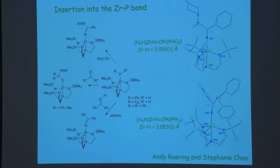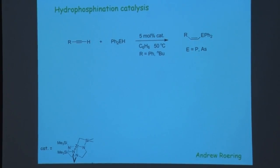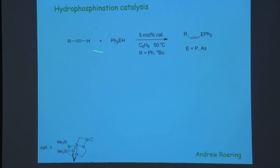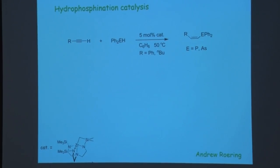Since these zirconium phosphido compounds activated phosphorus-hydrogen bonds, the reasonable next step was to think about catalytic hydrophosphonation. We tried it and it succeeded — we could take terminal alkynes and phosphines and hydrophosphonate, and also take arsines and hydroarsenate. But what was strange is that we ran through this chemistry and found big limitations: it really only worked for terminal alkynes, not internal alkynes, not alkenes — not much other than the carbon-carbon triple bond.